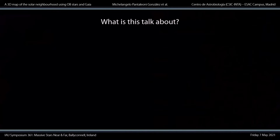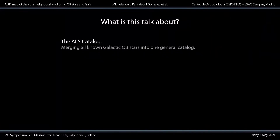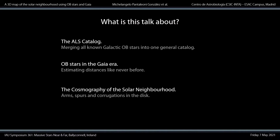So what is this talk about really? First, it's a talk about the history of a century of attempts to gather knowledge about the massive stellar population of the galaxy and a review of our current situation. Second, it's also a talk about the techniques and methods we can use in the Gaia era and about how careful we have to be when calculating distances. And finally, this is a talk about the science of galactic cartography and the general properties of the galactic OB population.